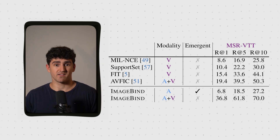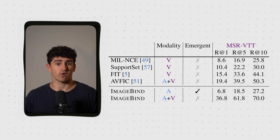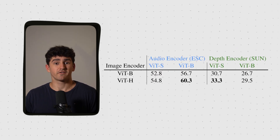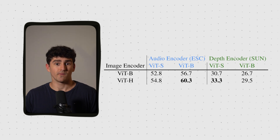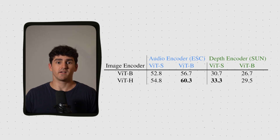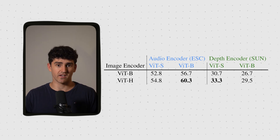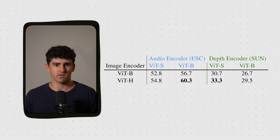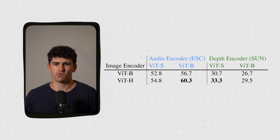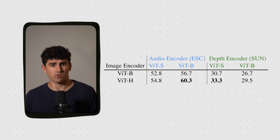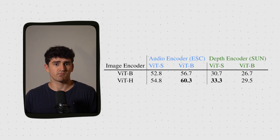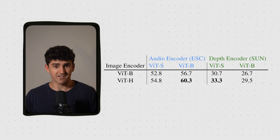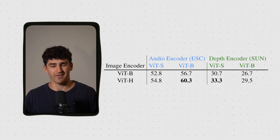This combining of embeddings is literally just simple addition of the two embedding vectors. Another finding is the effect of scaling the image encoder — a bigger image encoder leads to better representations, measured by emergent zero-shot classification. This makes intuitive sense: better visual representations improve the binding of modalities, i.e., improve the representations of the other modalities.